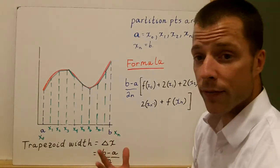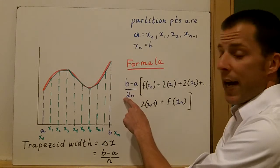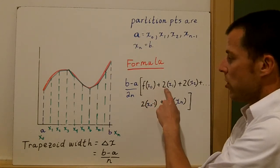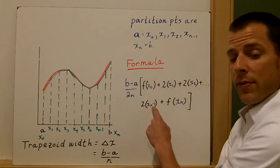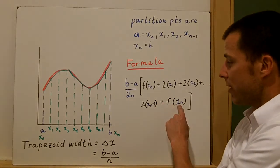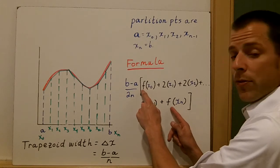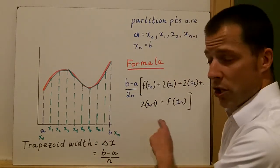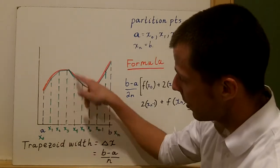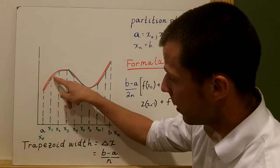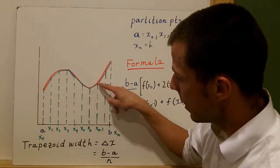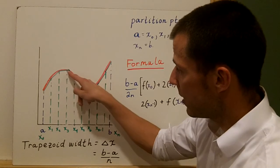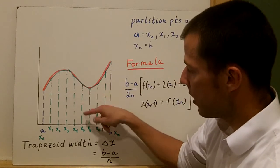The formula for the trapezoid rule is b minus a over 2n, multiplied by: f of x sub zero, plus two times f of x sub one, plus two times f of x sub two, continuing through two times f of x sub n-1, and finally f of x sub n. Notice the starting and ending points are not multiplied by two, but every middle point is — that's really important. These trapezoids look like rectangles but when you connect the points x1 through x sub n-1, the connecting lines are not parallel to the axes, making them trapezoids.